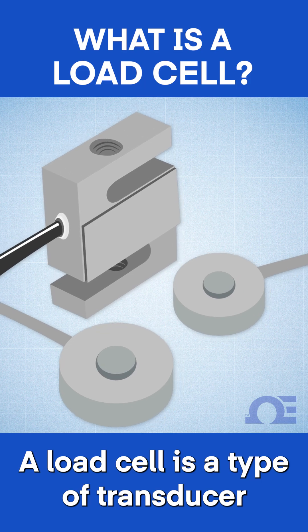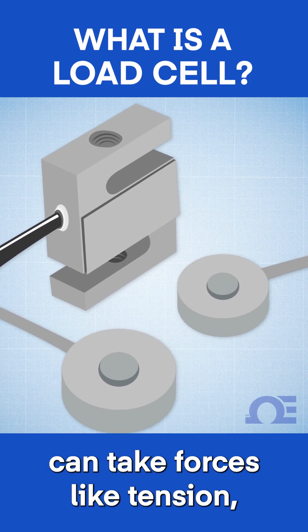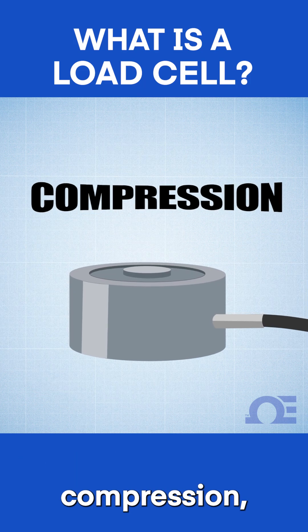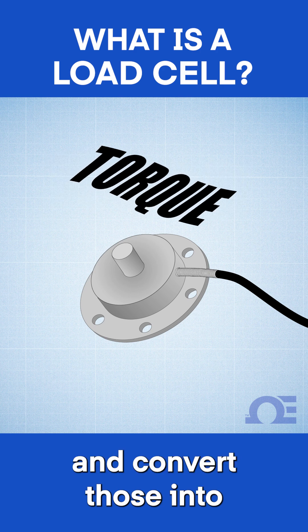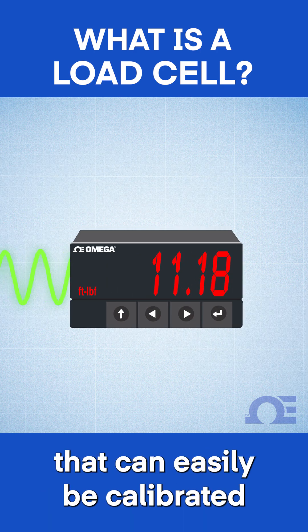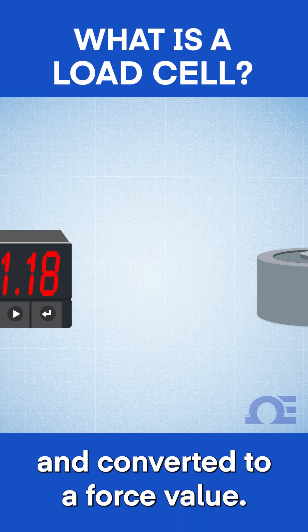A load cell is a type of transducer that, depending on its construction, can take forces like tension, compression, or torque and convert those into a measurable electrical output that can easily be calibrated and converted to a force value.